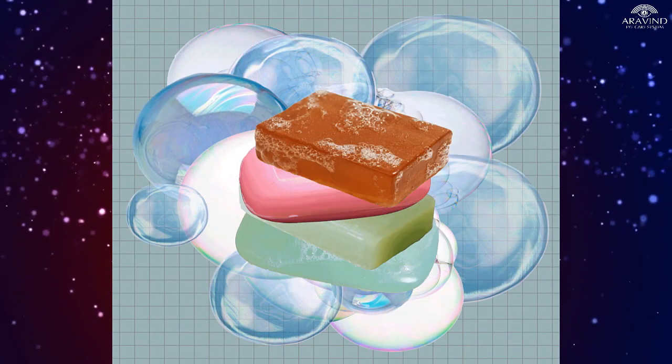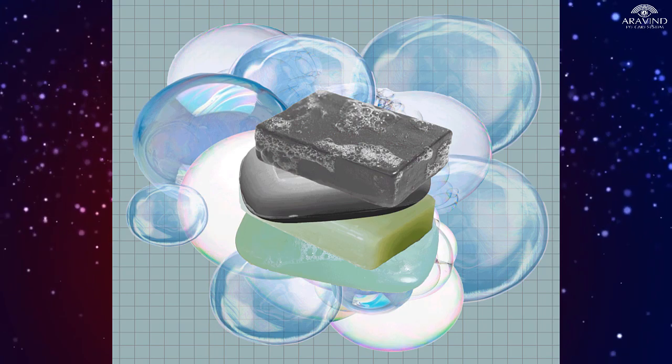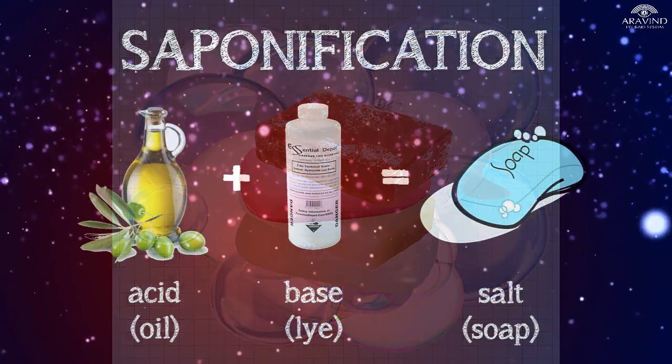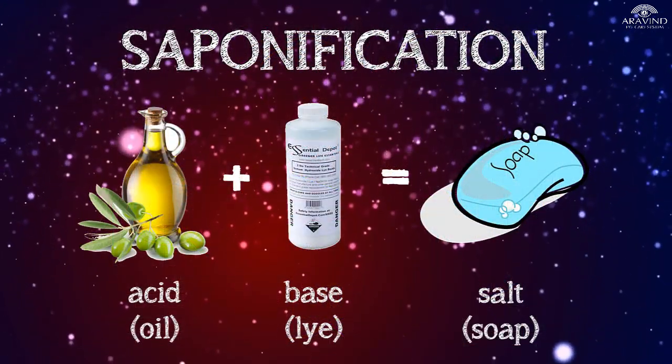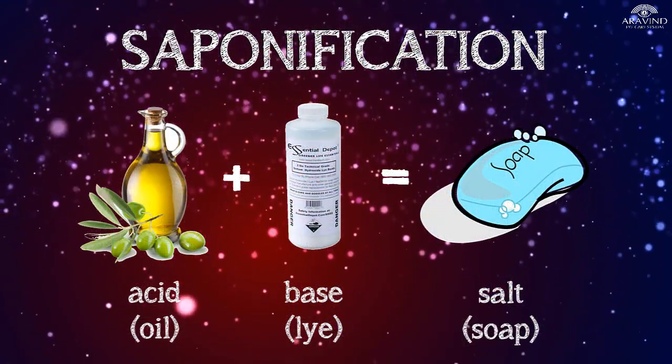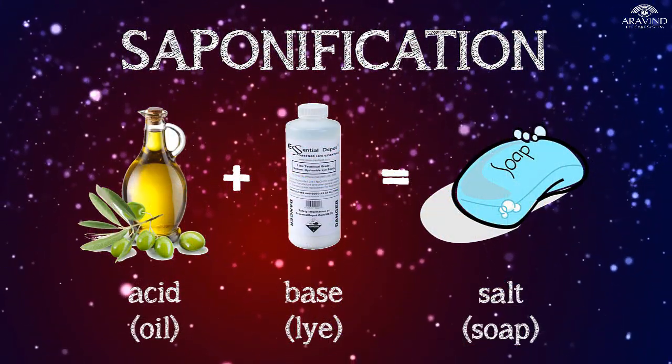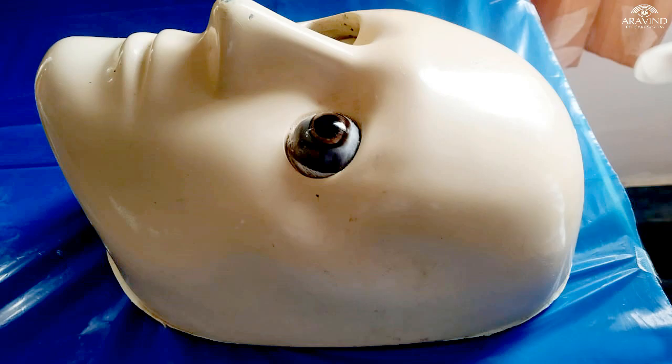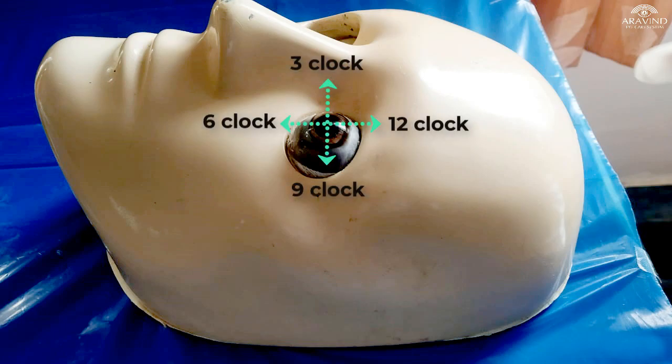Soap is a salt of fatty acid. They are produced by saponification of fats. The goat's eye wrapped with cotton gauze is loaded on the material head.